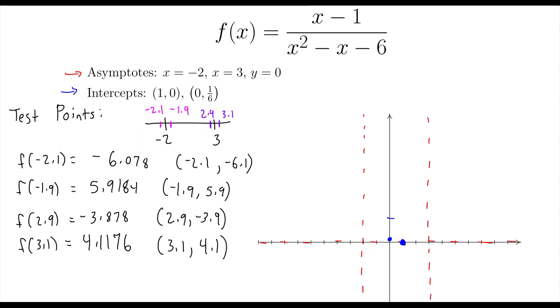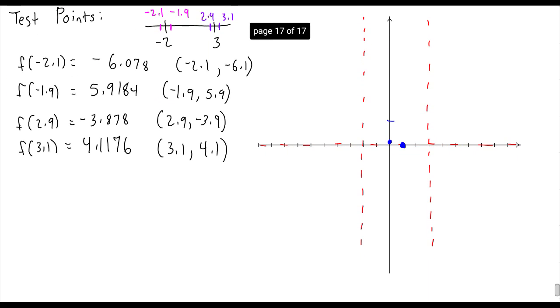I'm going to use these four test points to sketch the graph. At negative 2.1, I get negative 6.1. That's going to be down here somewhere. At negative 1.9, I get a positive 5.9. At 2.9, that's the left of this vertical asymptote here, I get negative 3.9, so that's going to be down here somewhere. Maybe you can kind of see the shape a little bit. You have to stick close to the x-axis here, but below it. Drop down, hit that point.